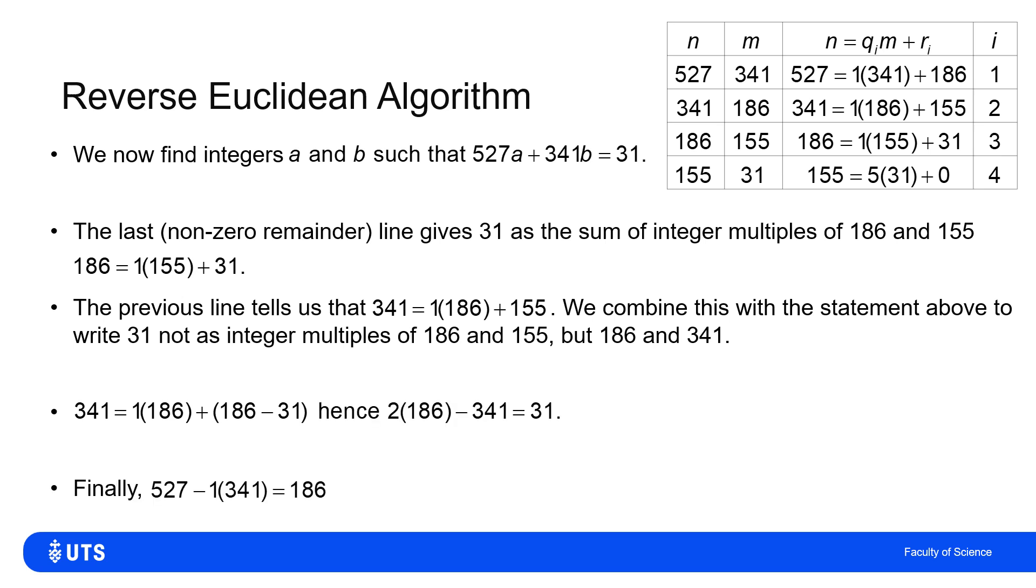I'll get to 527 minus one lot of 341 being 186, but I can replace 186 as 527 minus 341. When I apply the top line, I'm left with two lots of 527 minus 341 minus 341 being 31. When I tidy that up, it gives me two lots of 527 minus three lots of 341 is 31.